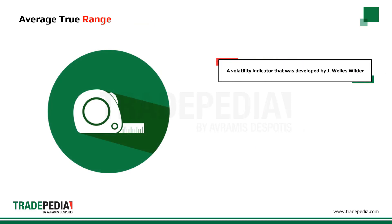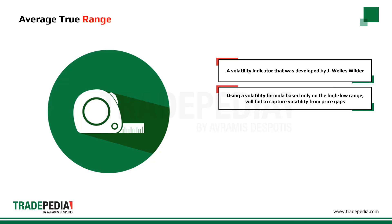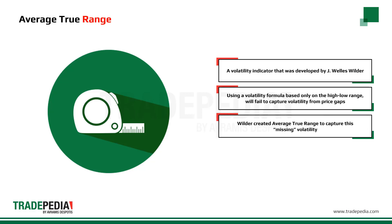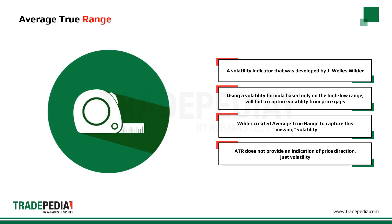Average true range is another volatility indicator that was developed by J. Wells Wilder. Using a volatility formula based only on the high-low range will fail to capture volatility from price gaps. This is why Wilder created the Average True Range, to capture this missing volatility. The average true range does not provide an indication of price direction, just volatility.